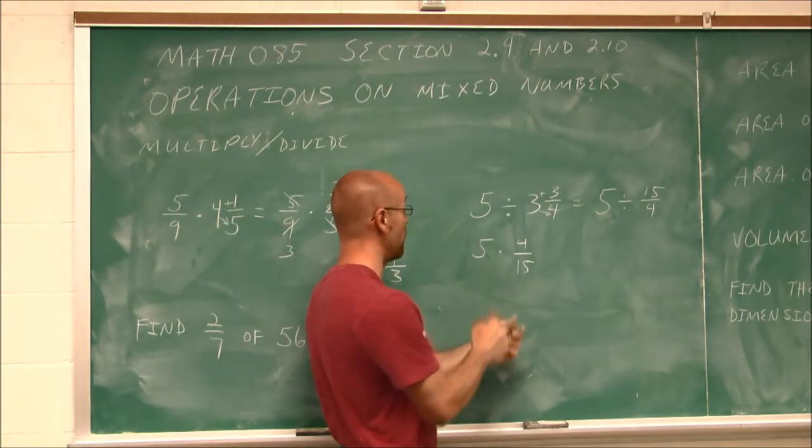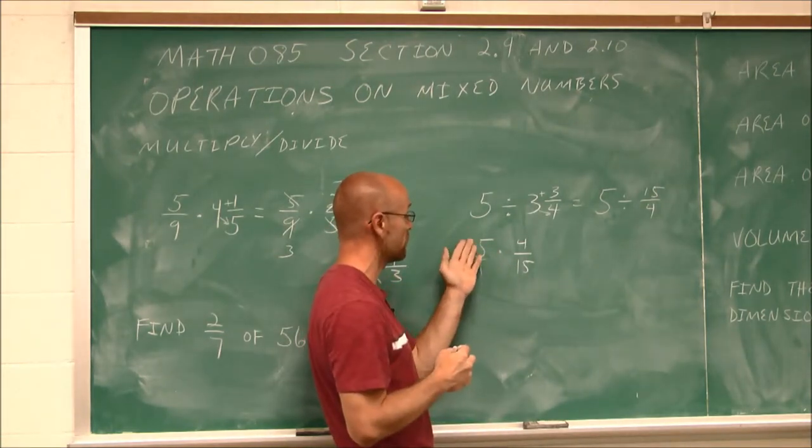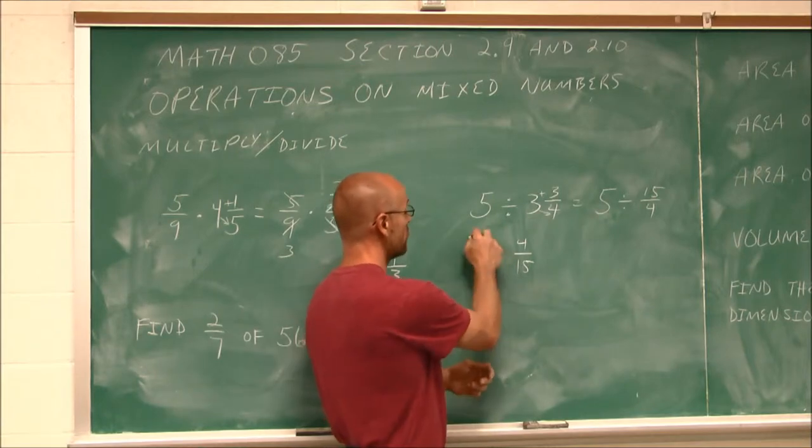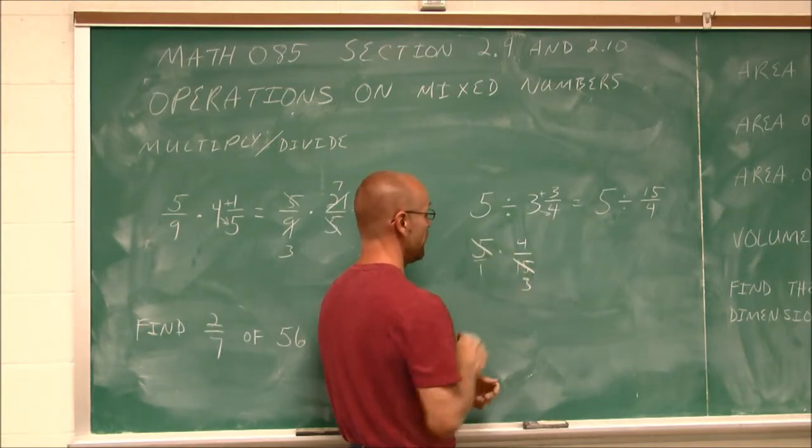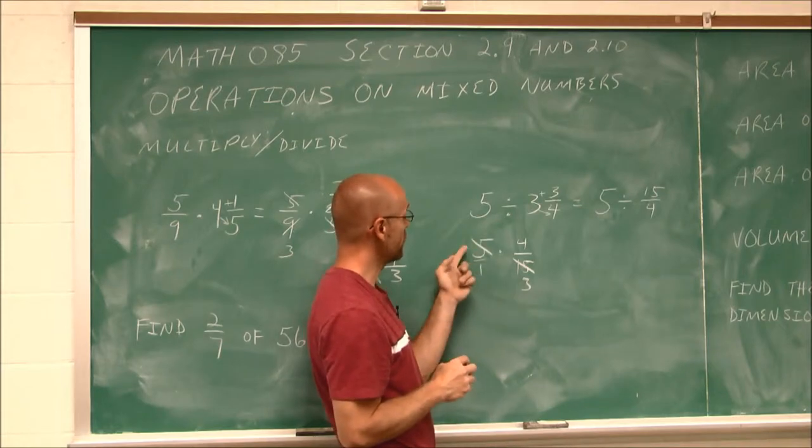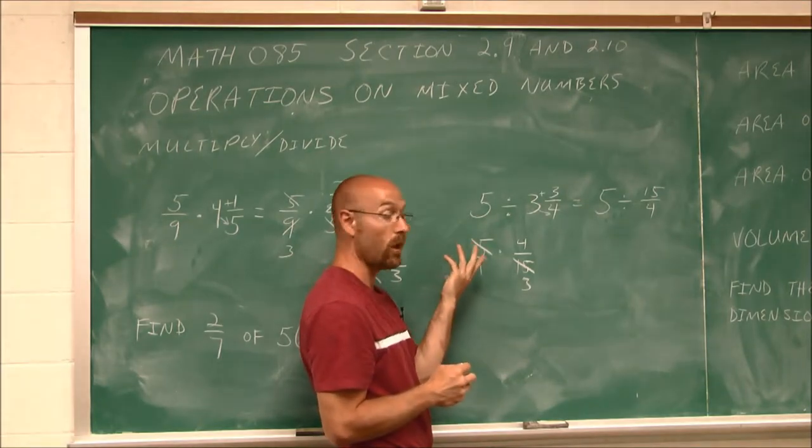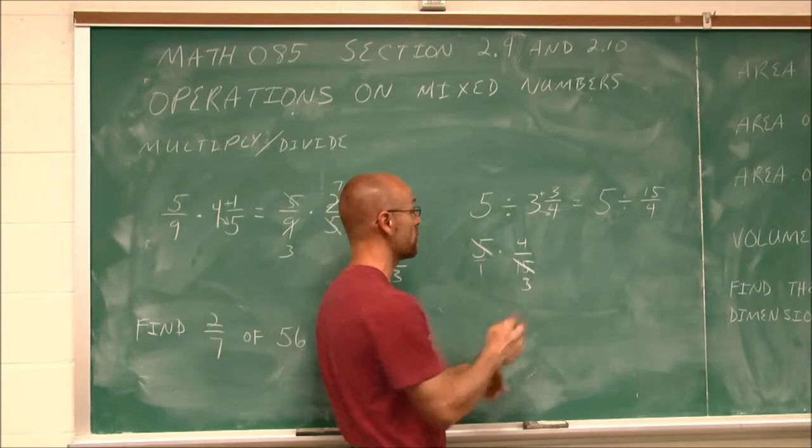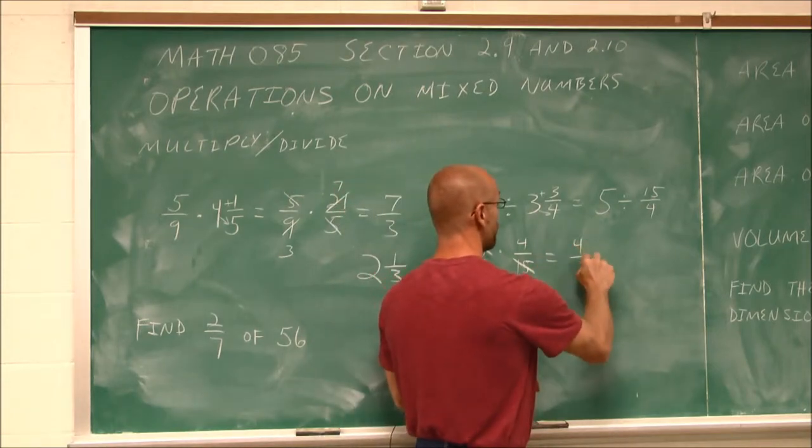Again, this would be a review of multiplying fractions. We can think of this as 5 over 1. And we can reduce 5 and 15, have that common factor of 5. And if we look at this, I have 1 over 1, which is just 1. 1 times 4 over 3, we get 4/3.